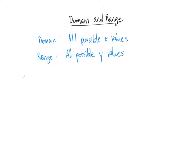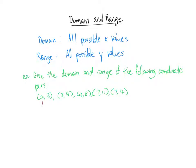Let's see this in action. So, for example, our x coordinates are here, here, right here, and here. So when you are given the domain, you want to list all the x coordinates. So the domain is x equals 2, 3, 4, 7. And we don't have to list 7 twice because it's enough to just say it's a possible value of x, so we only need to list it once.